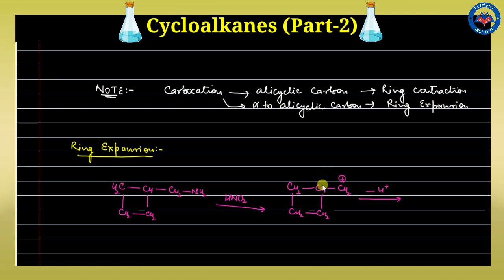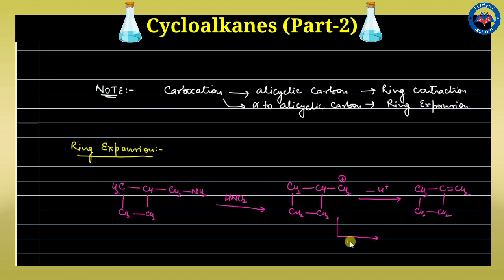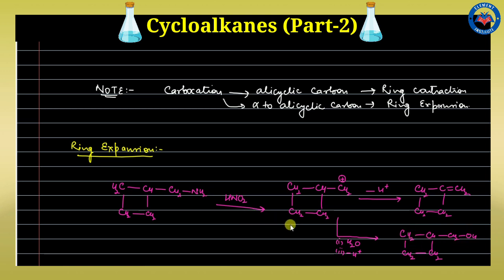A carbocation forms, and the adjacent C–C bond migrates, giving a CH₂=cyclobutane (methylenecyclobutane) intermediate with a positive charge on the ring carbon. Water then acts as a nucleophile and adds to the carbocation, followed by proton release to give an alcohol — cyclobutane carbinol.